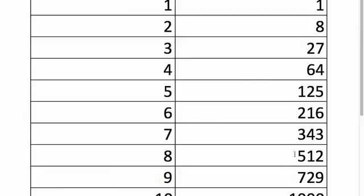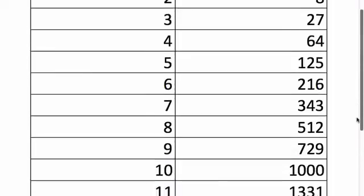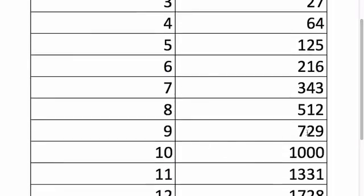7 might be easier to memorize. It's symmetrical: 343. 8 is 512. 9 is 729. That you can memorize or recognize quickly because when you add the digits, 7 plus 2, you get 9, plus 9 is 18. Any multiple of 9, if you add the digits, you get a multiple of 9. So 9 plus 9 is 18, that is a multiple of 9. So 9 cubed is 729.